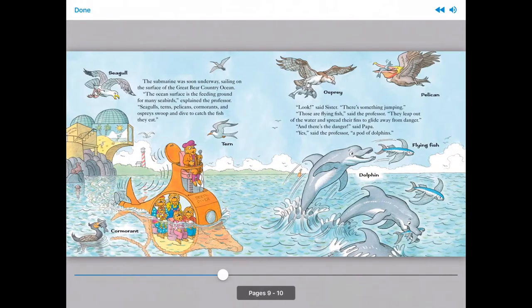The submarine was soon underway, sailing on the surface of the Great Bear Country Ocean. The ocean surface is the feeding ground for many seabirds, explained the professor. Seagulls, terns, pelicans, cormorants, and ospreys swoop and dive to catch the fish they eat. Look, said Sister. There's something jumping. Those are flying fish, said the professor.